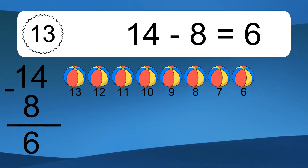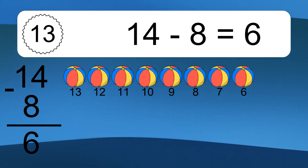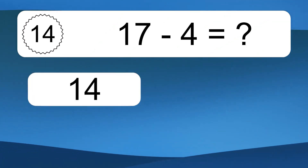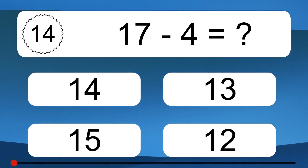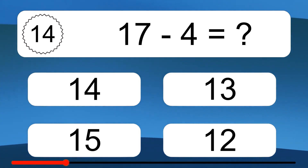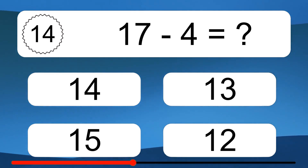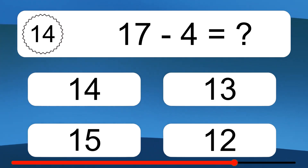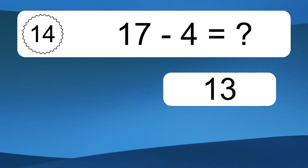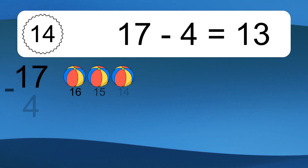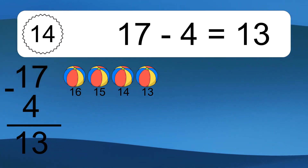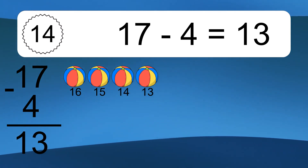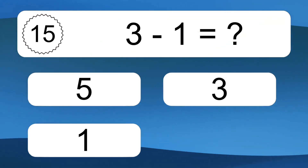17 minus 4 equals what? 17 minus 4 equals 13. Let's count it: 16, 15, 14, 13.